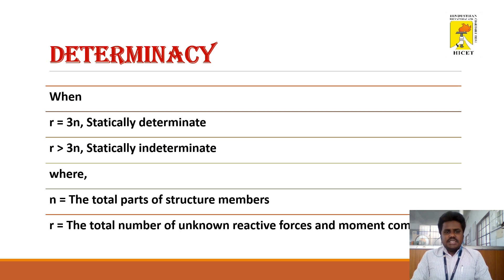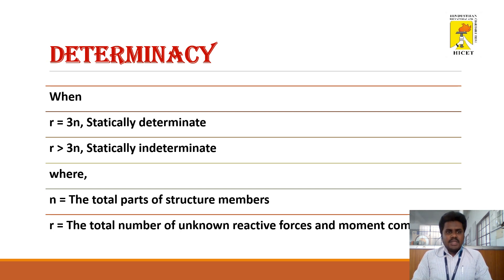For determinacy, we use the condition: r (the number of support reactions) equals 3 into n (number of members). If r equals 3n, the structure is statically determinate. If r exceeds 3n, the structure is statically indeterminate, where n is the total number of parts or members and r is the total number of unknown reactive forces.